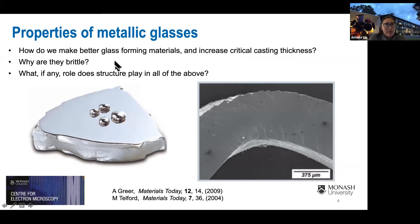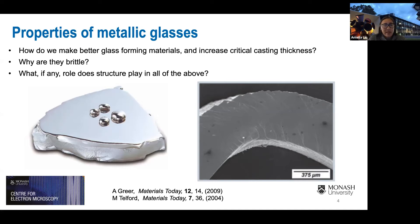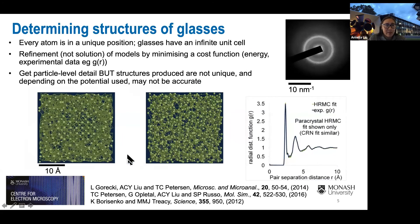There are also many engineering problems with glasses — particularly metallic glasses, which are a special interest of mine. For example: how do we make glass-forming materials that form more easily and increase the critical casting thickness? Why are glasses brittle and show brittle failure? We understand the topological defects that mediate deformation in a crystal, but what are the atomic-scale structures that mediate deformation in a glass, and what role does structure play? This motivates a lot of my research.